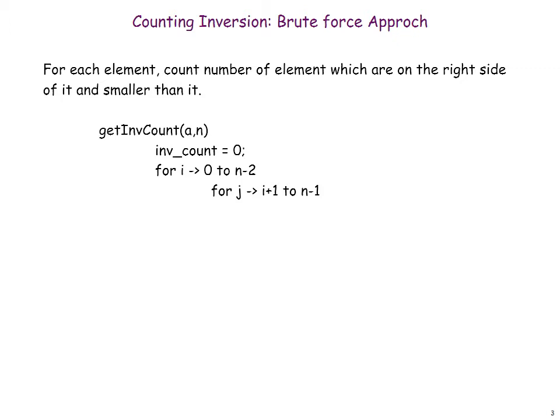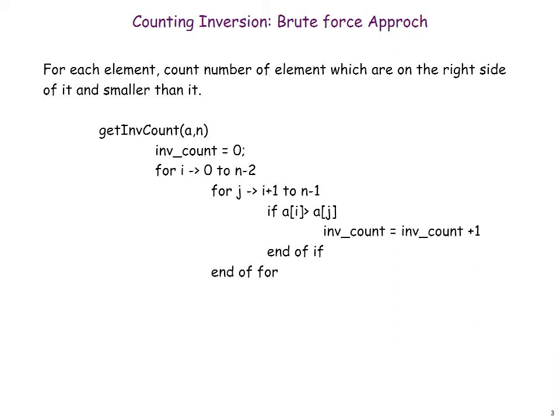Looking at the method getInverseCount, we first initialize the inverse count to 0. Then we run a loop from 0 to n-2. For each element we run an inner loop from that element to the element at index n-1, and whenever we encounter an element which is smaller we increment the count. Finally we return the count. This method solves the problem in O(n²) time complexity.